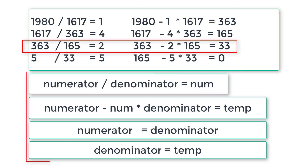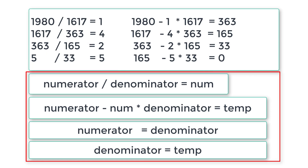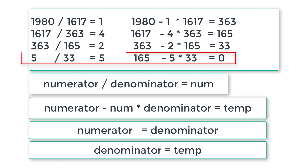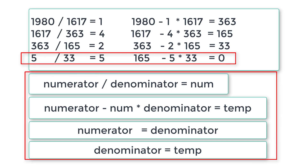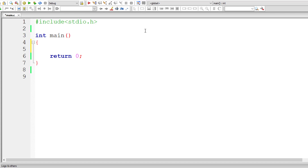We need to repeat this logic for each column until temp equals zero. Once temp becomes zero, whatever is present inside denominator will be the GCD of J and K. So with that knowledge, let me write the C program.